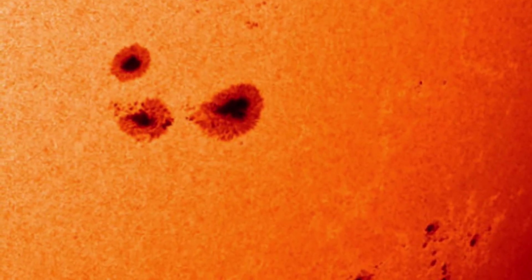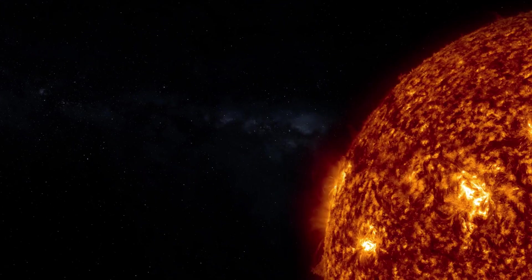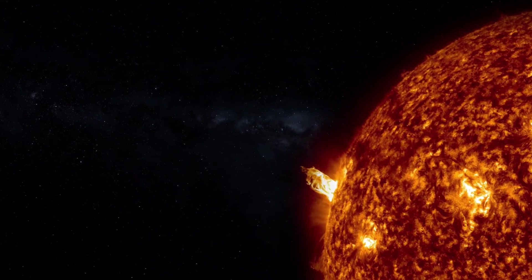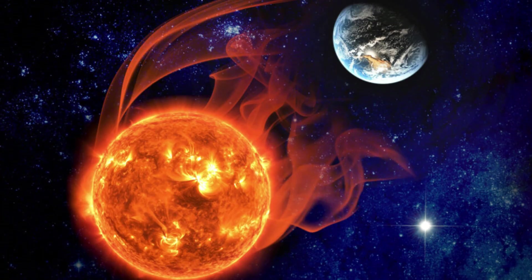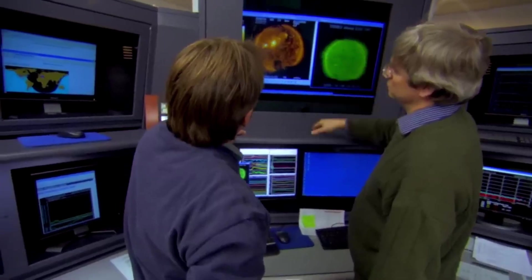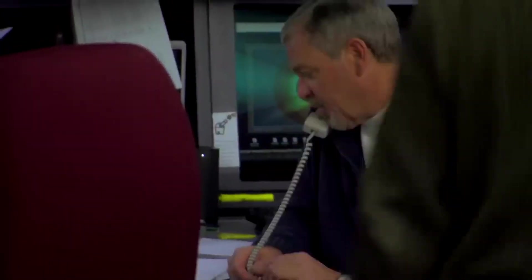At that time, the Sunspot possessed a strong delta charge, which could result in magnetic reconnection, potentially leading to a powerful solar flare aimed directly at Earth.